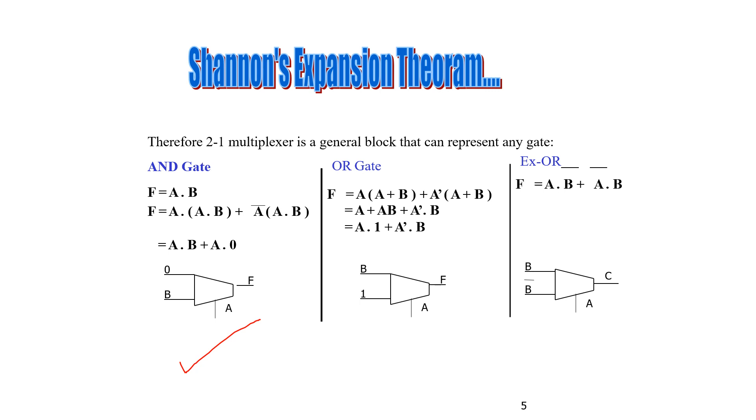This is the way we implement a 2-to-1 multiplexer for any gate by applying Shannon's Expansion Theorem. This is used for each case. Thank you.